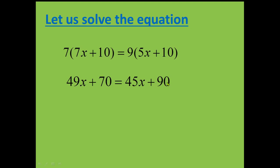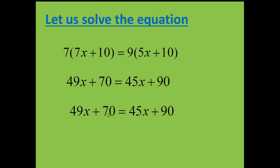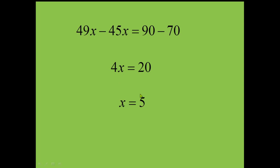So let us look at our next step: 49X plus 70 is equal to 45X plus 90. So let us combine the like terms: 49X minus 45X, 90 minus 70. So we get 4X is equal to 20. So X is going to be 5. X is the factor with which our ratio is going to be multiplied, and we get X as 5.